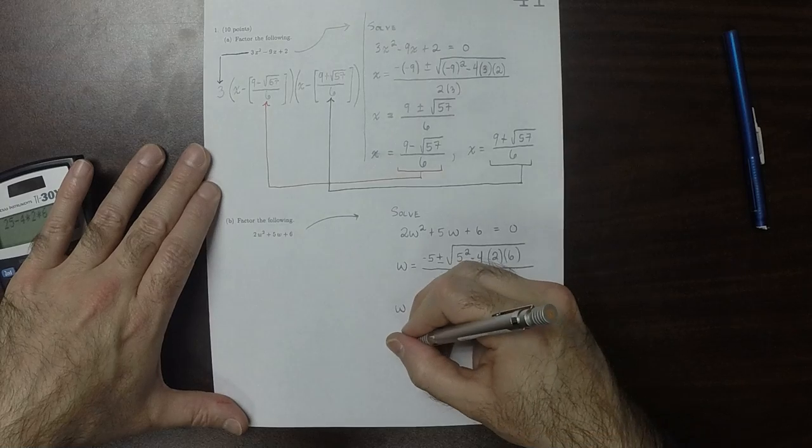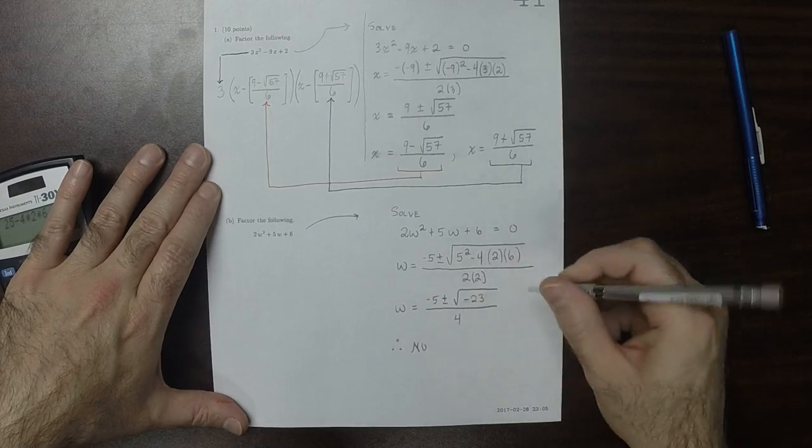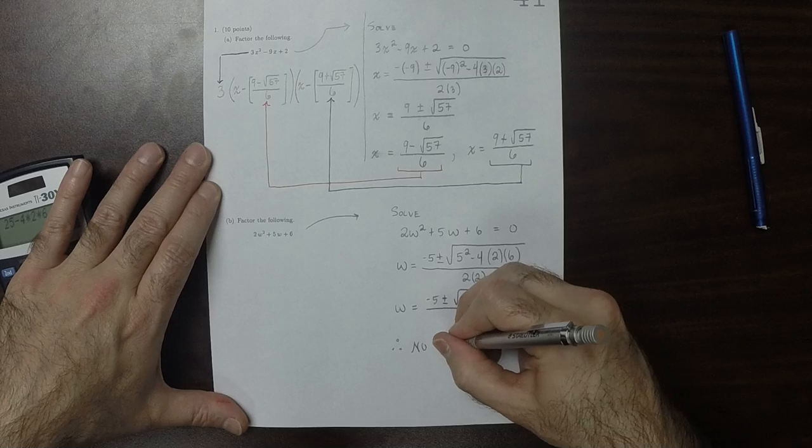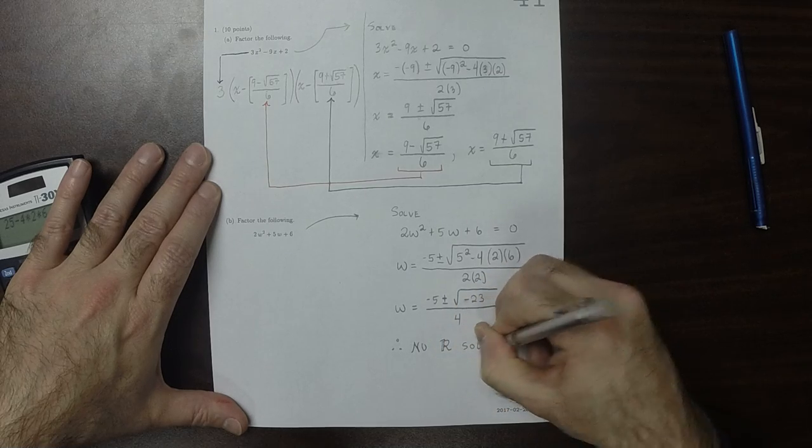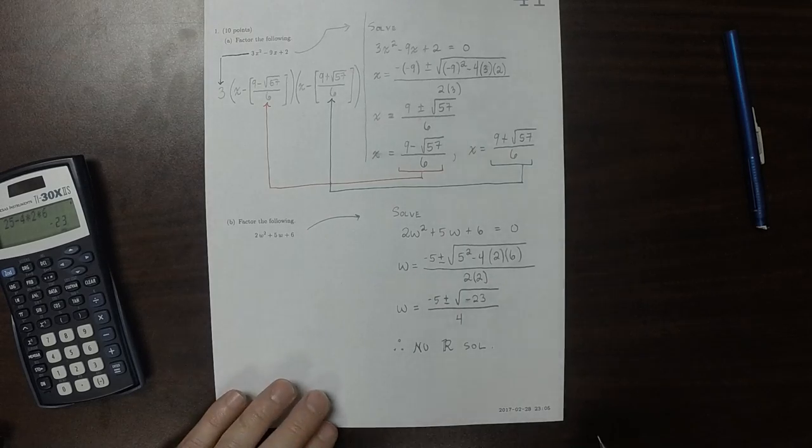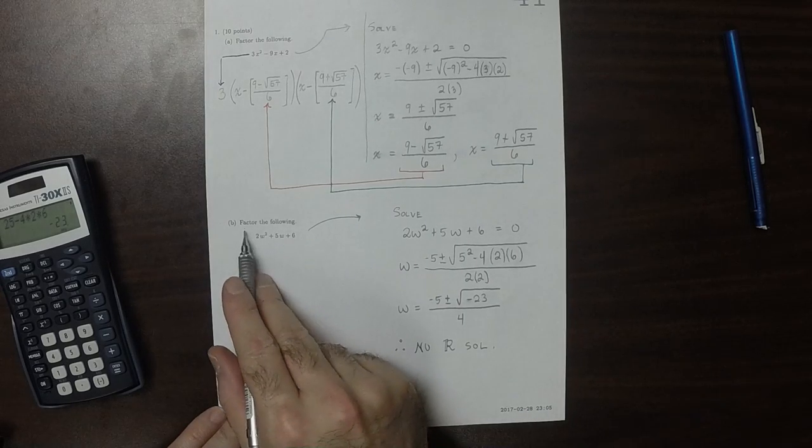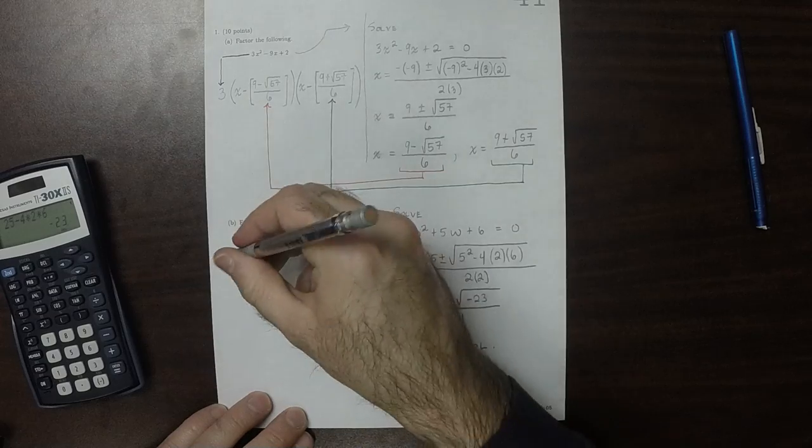So that means that because we have a negative in the radical, there is no real solution. And as a result of this, the correct response to the request to factor this is to say that this is prime.